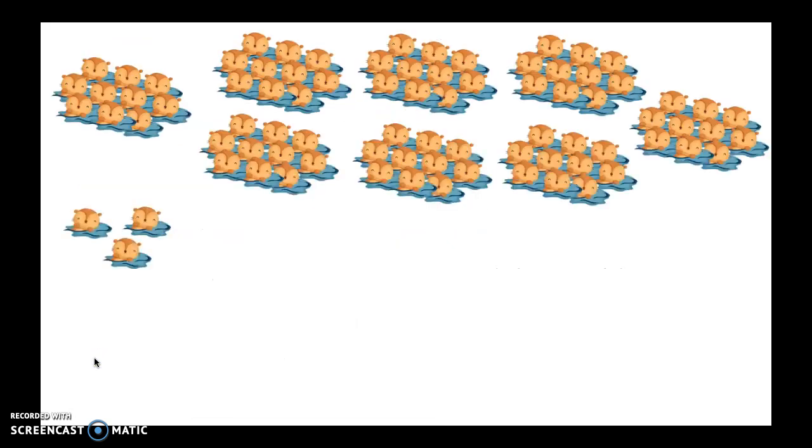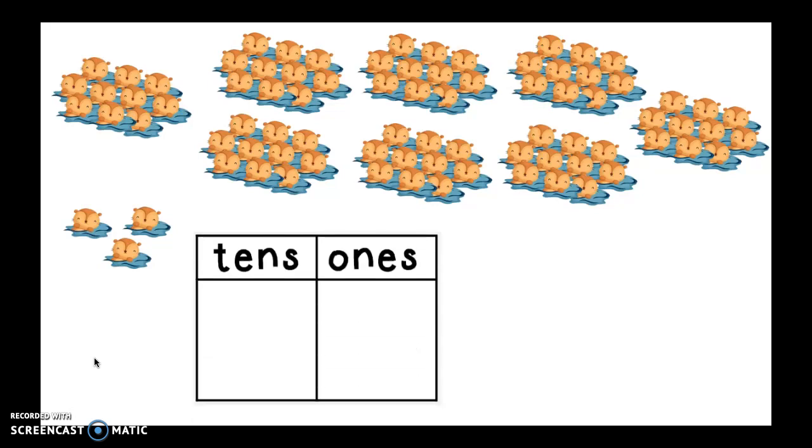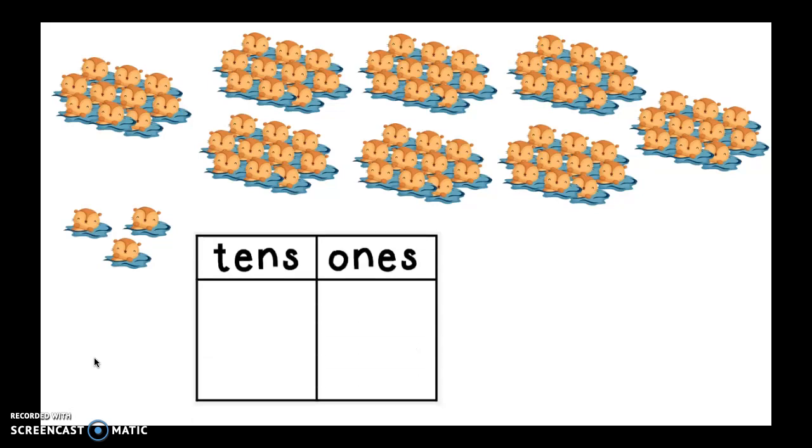The next group of animals I saw are obviously my favorite, the river otter. I love, love, love them. Now a group of otters is called a romp. Isn't that cool? All right. So I want to know how many otters are in this romp. I'm going to get out my trusty place value mat to help me out.